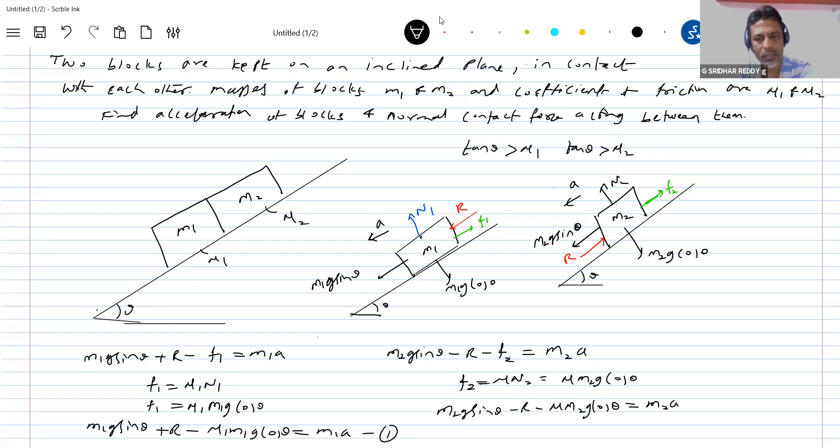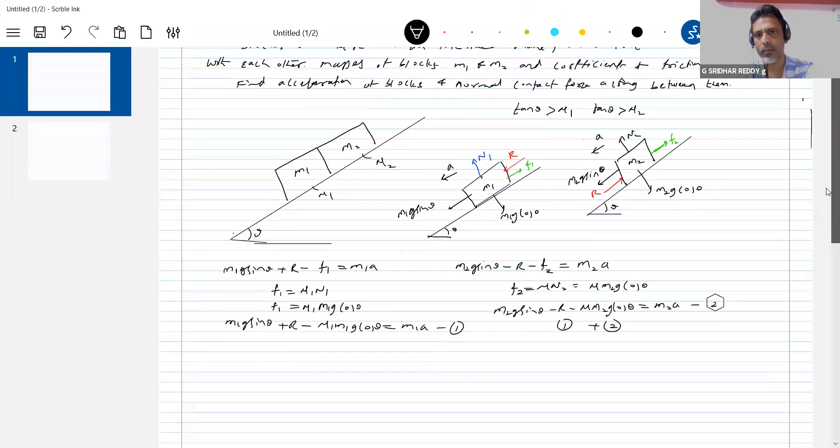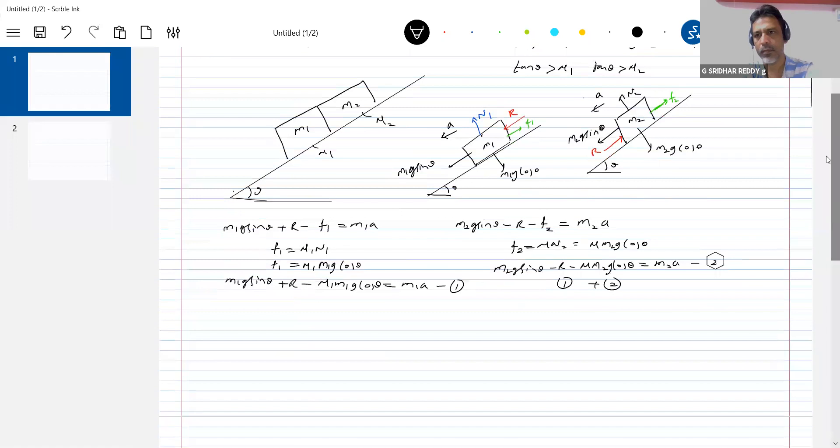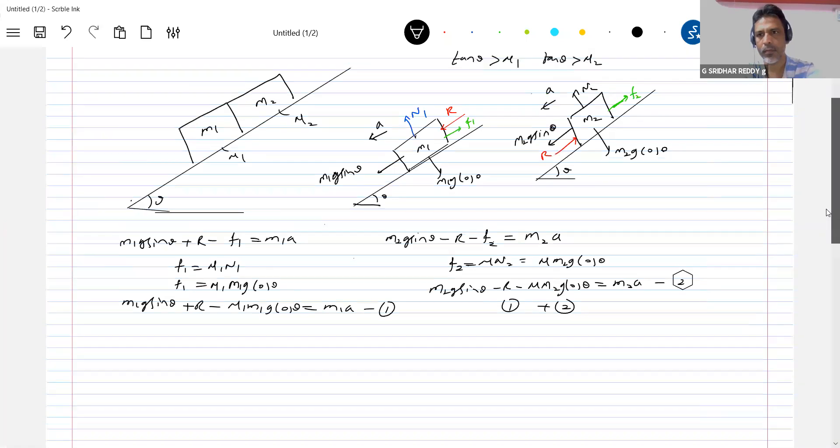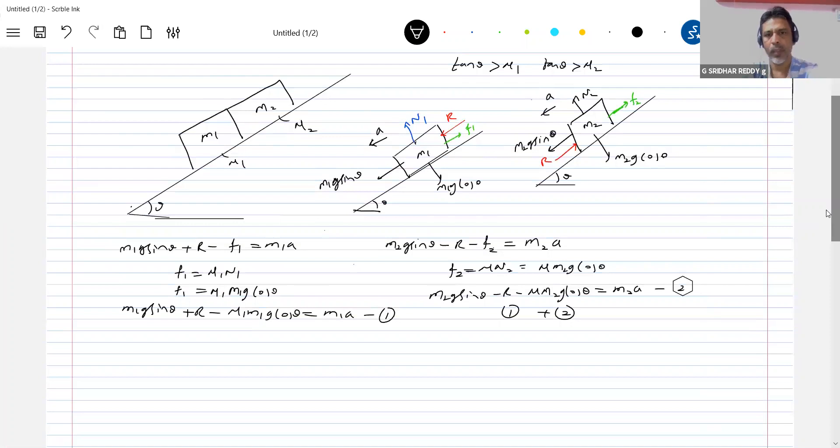Adding up these two will get expression for acceleration because R will get cancelled out, adding one plus two.